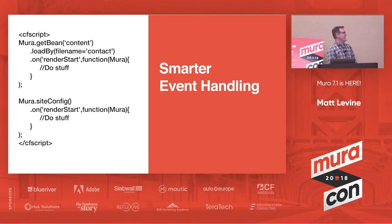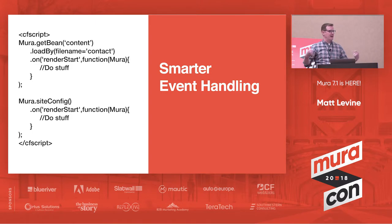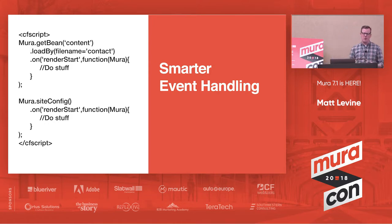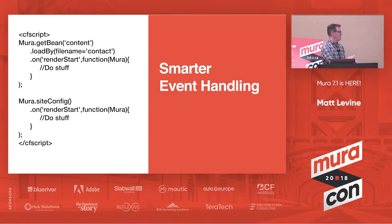We have smarter event handling. Pre-7.1, when you wanted to register an event listener you'd register it for a class or type of object — so for a widget entity you'd say 'on widget save' or 'on widget before save' and handle that event contextually. With 7.1 we have a more focused way of registering events. You can actually register an event directly to an instance of an object, which allows you to be a bit more like JavaScript — so if you have a particular button on the page you can listen for a click on that one button specifically, not all buttons.